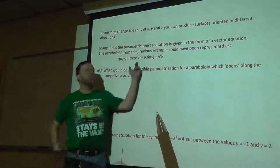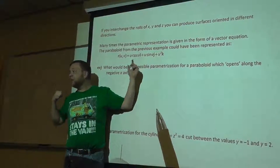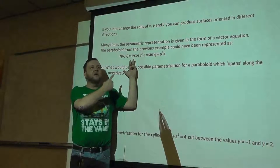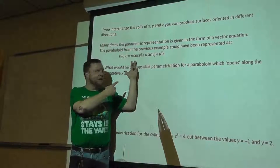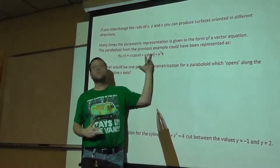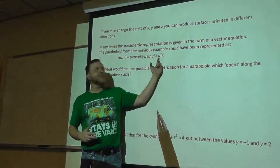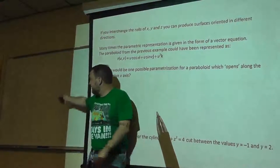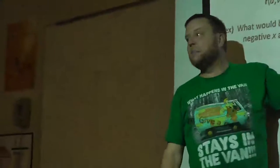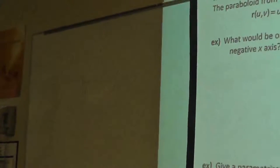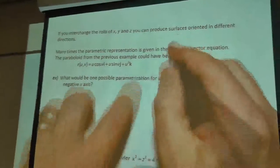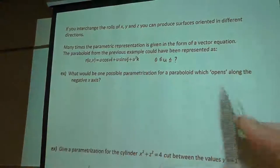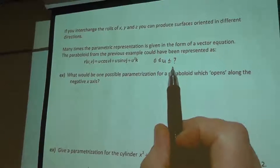I've just taken the parameterization from the previous page. The previous page had x equals r cosine theta. This is just transposing r to u and theta to v — so that's still x equals r cosine theta, y equals r sine theta, and z equals r squared, or in this case u squared, because it's the same identity trick we did. So that would still give me a paraboloid for these values of u and v.